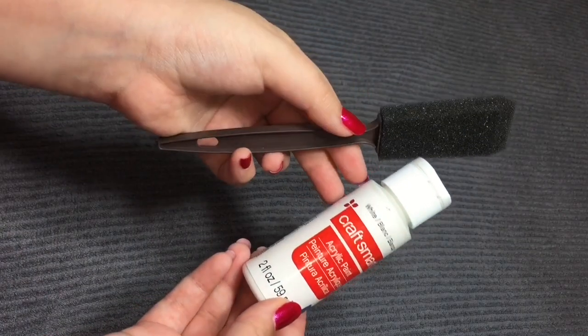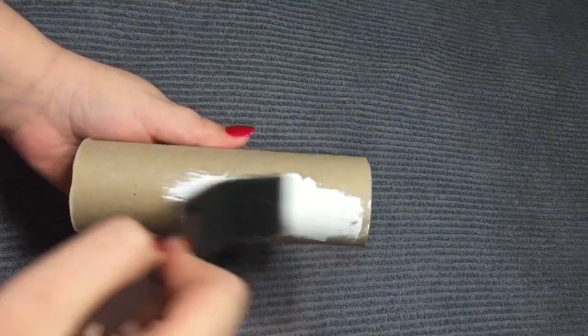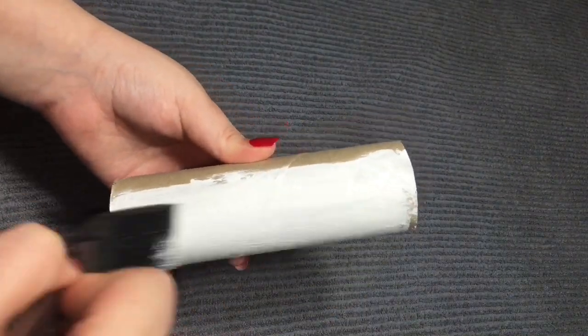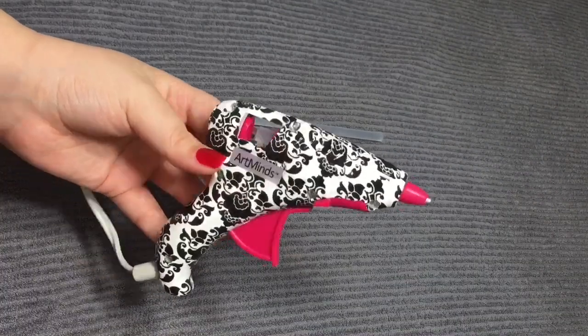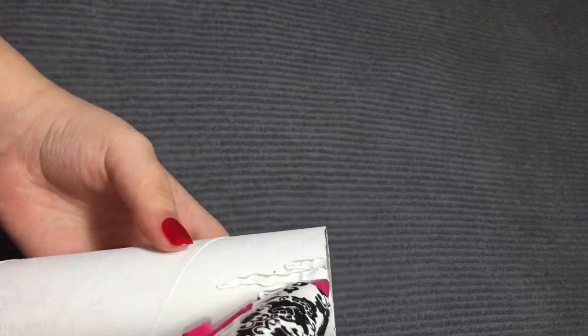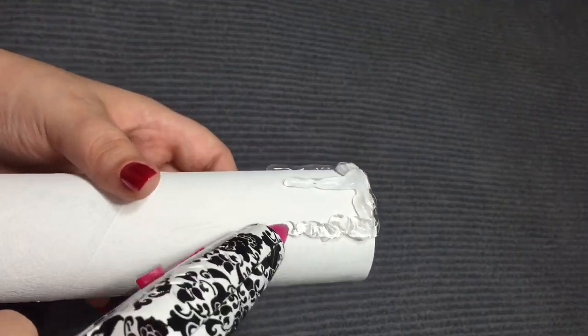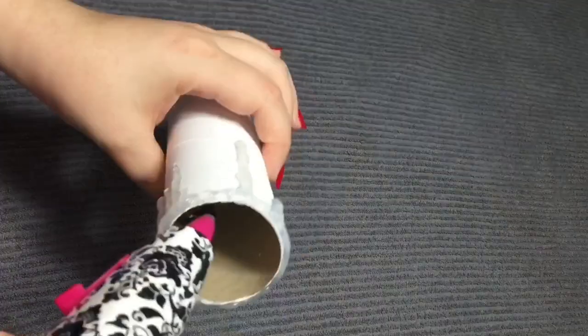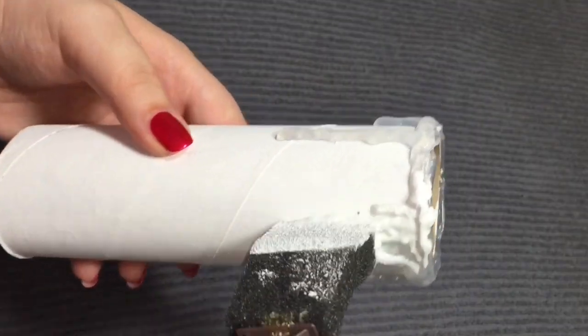Then you're going to paint the roll white. I'm using acrylic paint to do this. Use a hot glue gun to make drips to resemble hot wax melting. Do not cover up the holes that you just made. When the glue is dry, paint that white too.